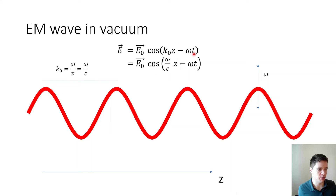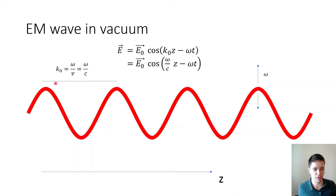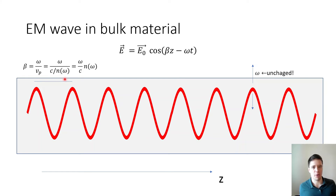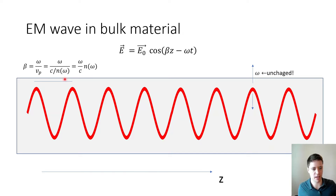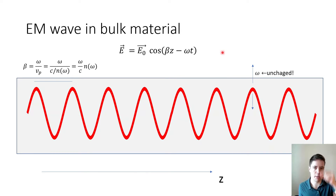If we had a plus sign instead of a minus, then for increasing time we'd have to select a more and more negative z value, so that peak would be shifting to the left. Now, what happens if we send that wave into a bulk material — imagine a solid homogeneous block of silica glass? It turns out that the temporal frequency is unchanged, meaning at any given location the field still wiggles up and down at the same rate as before, but the spatial frequency is actually altered.